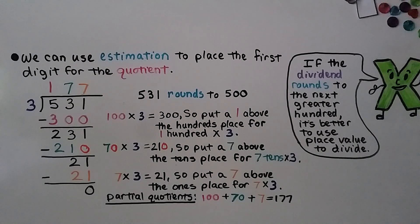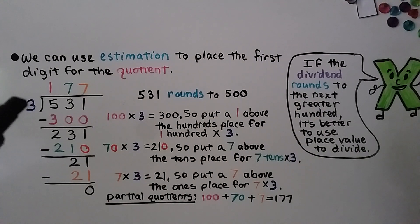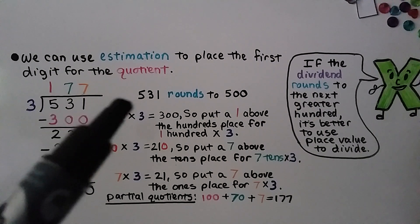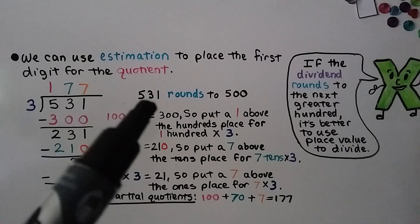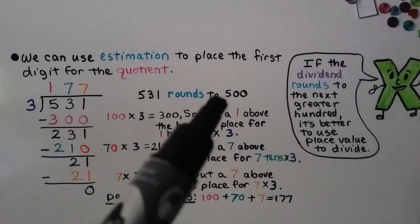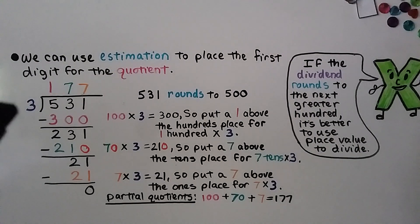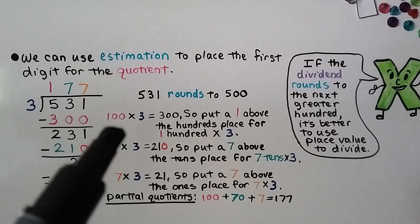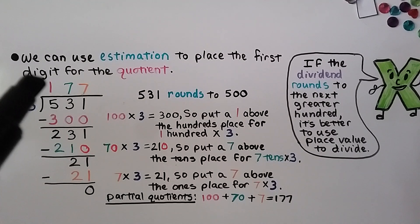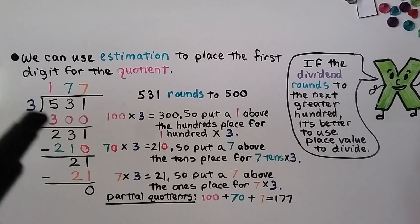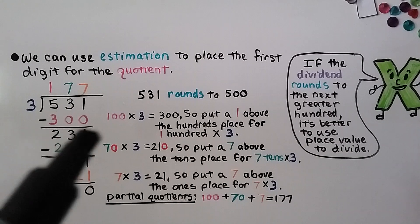We can use estimation to place the first digit of the quotient. Here we have 531 divided by 3. We round 531 — it rounds to 500, because the 3 tells the 5 to stay the same and the 3 and the 1 become zeros. We think: how many times can we fit 3 into 500? Well, 100 times 3 is 300, so that's 100 times. We put a 1 above the hundreds place for 100 times 3, and 100 times 3 is 300. We do our subtraction and get 231.